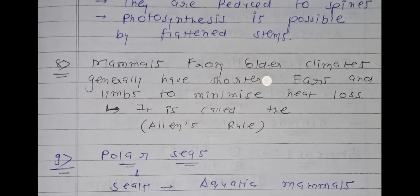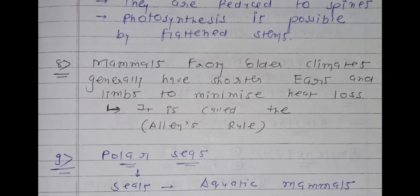Point number eight: some mammals found in colder climates generally have shorter ears and smaller limbs. This is to minimize heat loss — heat is lost through the skin surface. This is known as Allen's rule. According to Allen's rule, mammals found in polar regions or colder climates generally have shorter or smaller ears and limbs to minimize heat loss.